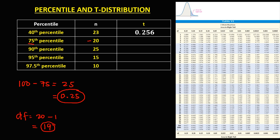To find the t-value using this table, since the area is 0.25 and the degrees of freedom is 19, therefore the t-value is 0.688.